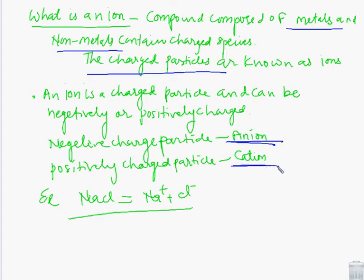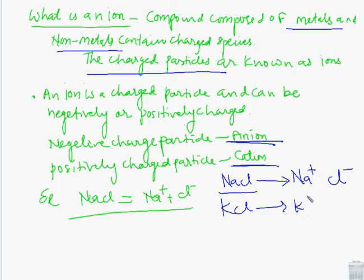Example, suppose I have written here sodium chloride, NaCl. Na is made up of a metal Na and a non-metal Cl. This Na is positive charge and Cl is negative charge. Suppose example KCl, that is K plus, Cl minus. Suppose example MgO, magnesium oxide, so here Mg 2 plus, O 2 minus. So these are cations and anions, that is charged particles, are said to be ions.